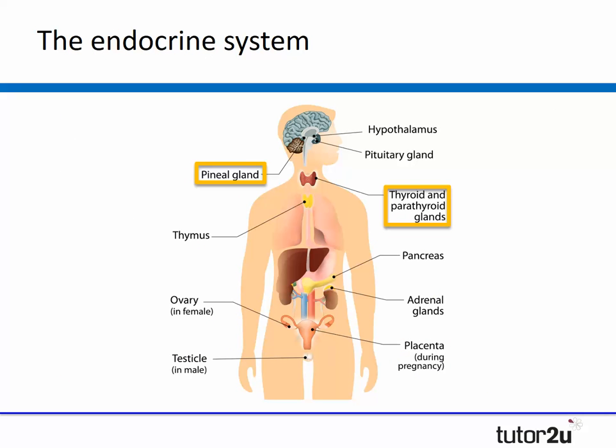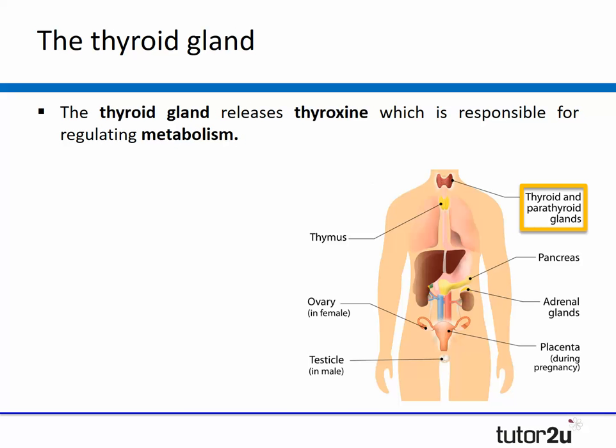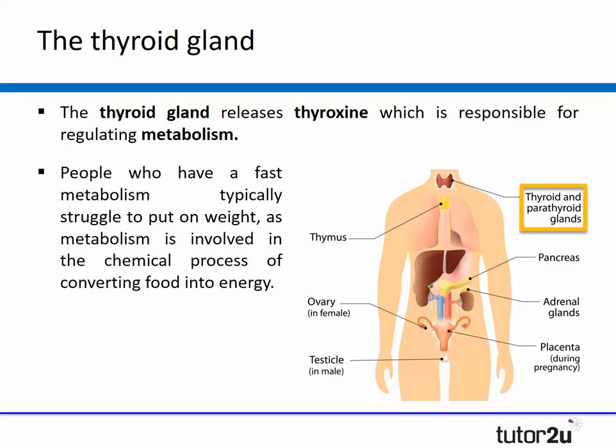Now let's turn our attention to the pineal gland and the thyroid gland — remember, I recommended focusing on other glands first. The main hormone released from the pineal gland is melatonin, which is responsible for biological rhythms including our sleep and waking cycle. Light affects how much melatonin your body produces, and during the shorter days of winter your body may produce less melatonin, potentially leading to seasonal affective disorder, or SAD. The thyroid gland releases thyroxine, which is responsible for regulating metabolism — people with a fast metabolism typically struggle to put on weight as metabolism converts food into energy.